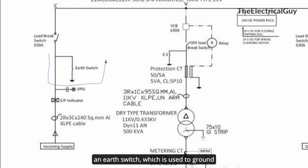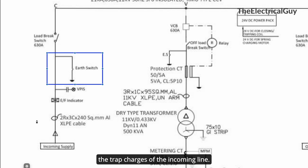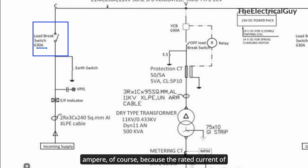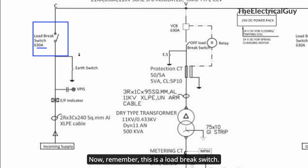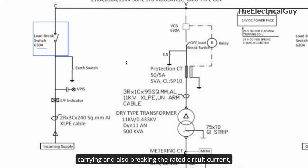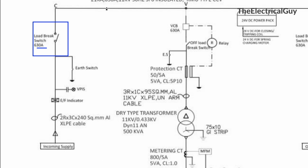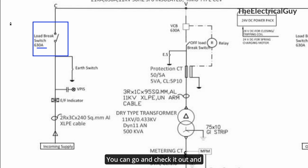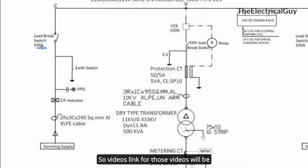Next, we have an earth switch which is used to ground the trapped charges of the incoming line — very important for safety. Then there is a load brake switch rated for 630A, matching the system rated current. This load brake switch is capable of carrying and breaking the rated circuit current of 630A, but it is not capable of breaking any sort of short circuit current. I have a dedicated video explaining the load brake switch and the difference between a load brake switch, a disconnector, and a circuit breaker — link is in the description.